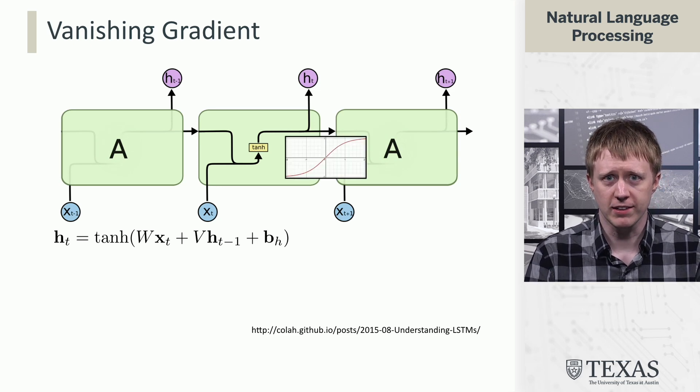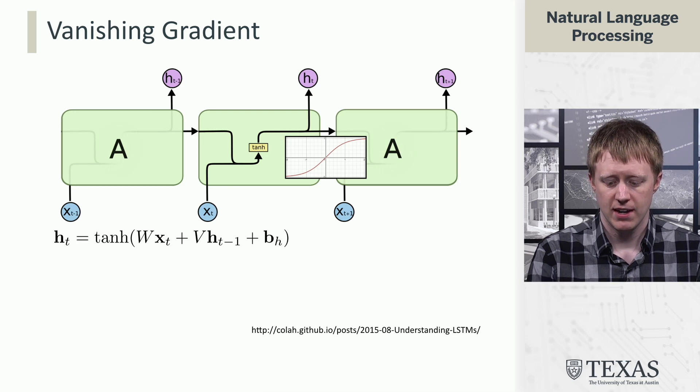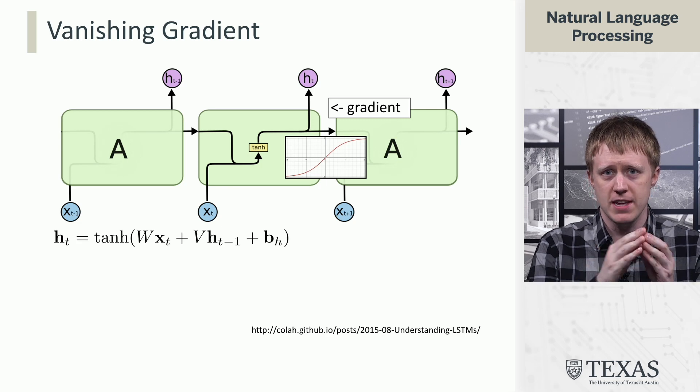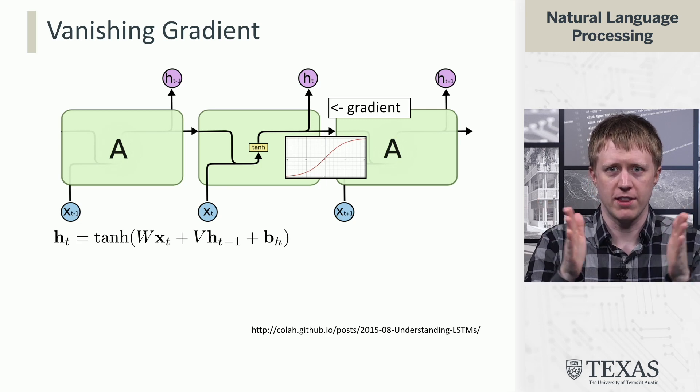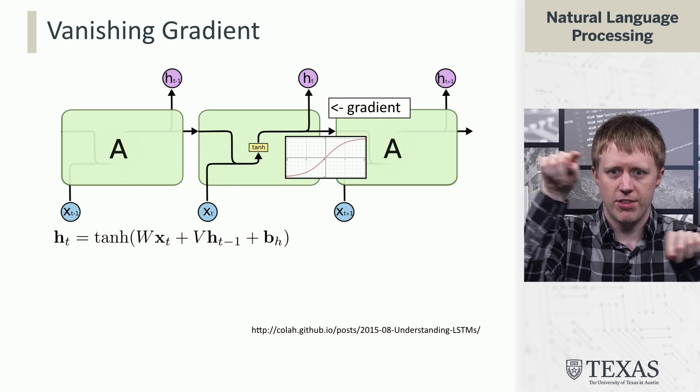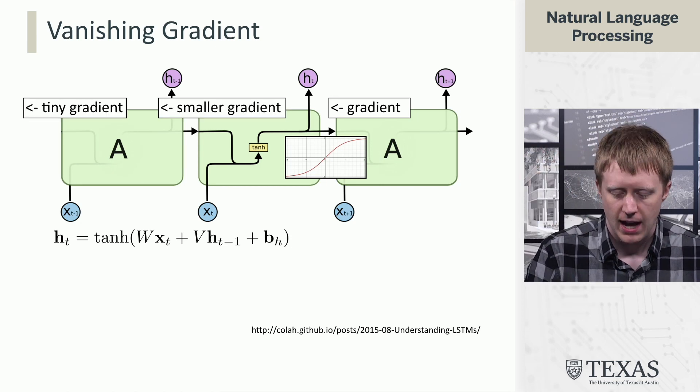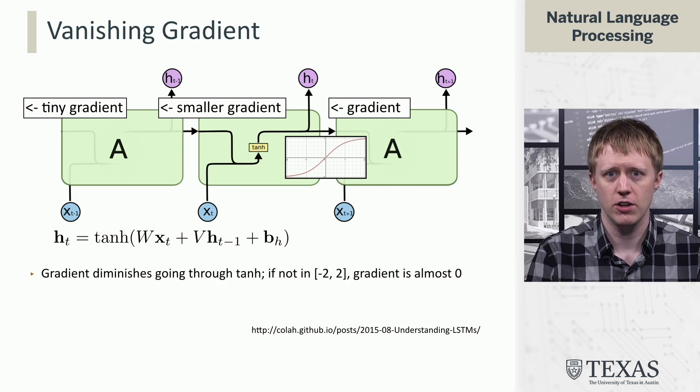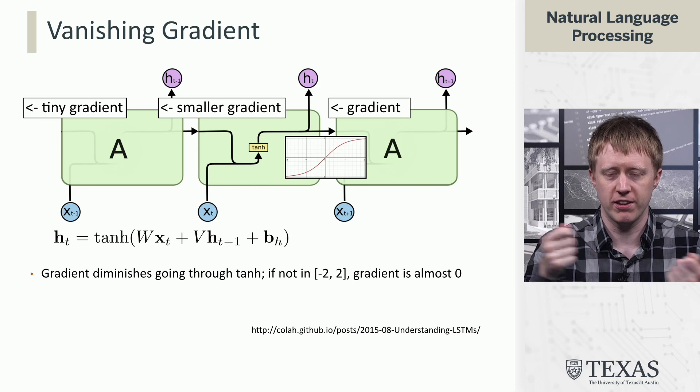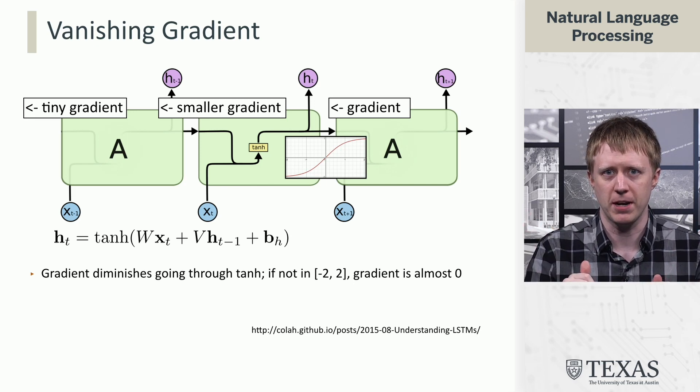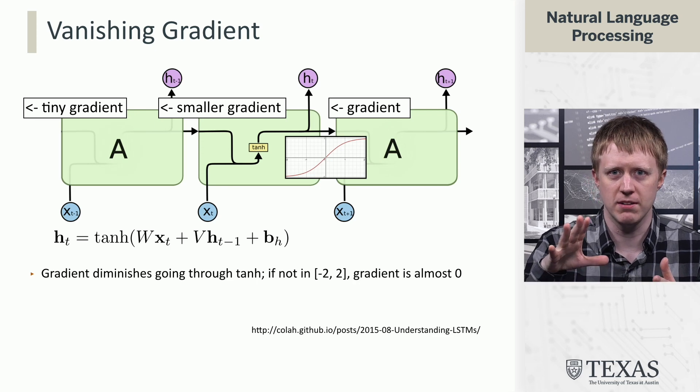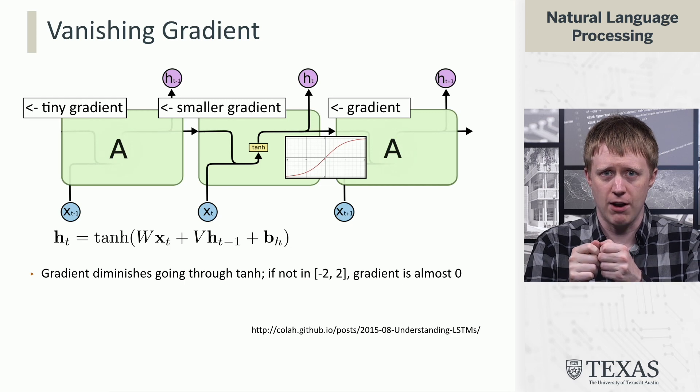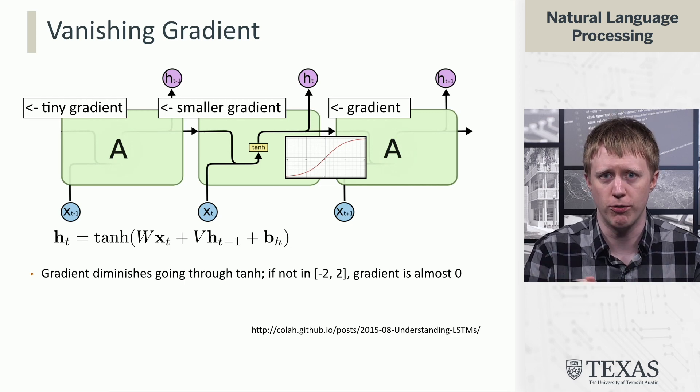What that means is that when you're doing back propagation, if the input to the tanh is very far out on either end of the spectrum, the tanh function is very flat. So if your values for the tanh are out towards these extreme ends of the spectrum, then the gradient is going to be very diminished as you go back through the network. This is going to be a problem for learning how to remember pieces of information over many time steps.